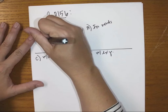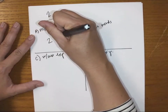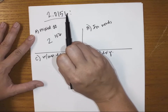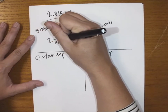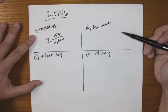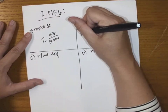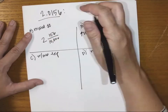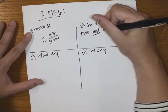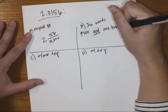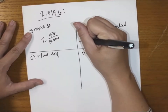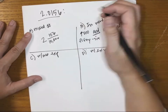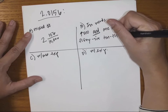The mixed number would be 2 and 156 over ten thousand — because the last digit is in the ten thousandths place. In words, it's 'two and' — the 'and' is the decimal point — then 0156 is one hundred fifty-six, and the 6 is in the ten thousandths place, so it's 'two and one hundred fifty-six ten thousandths.'